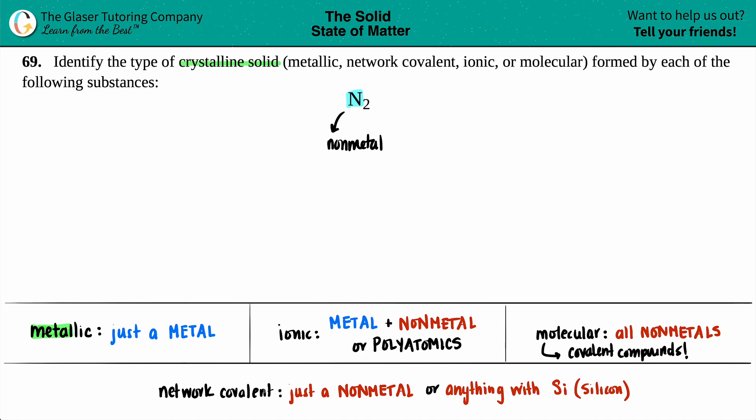But now let's just make sure that it's not a network covalent. A network covalent crystalline solid is when you just see a single nonmetal. Now you might say, well yeah, we have it here. I just see nitrogen. It's only one element. But how many do you have of them? You have two of them. If it was a network covalent, you would just see an N, for example, or you would just see a carbon. But once you smack on that you have two of them, or three of them, or whatever you have of them, it's not a network covalent anymore. Except when you start seeing silicon. But since there's multiple, we're going back to molecular.